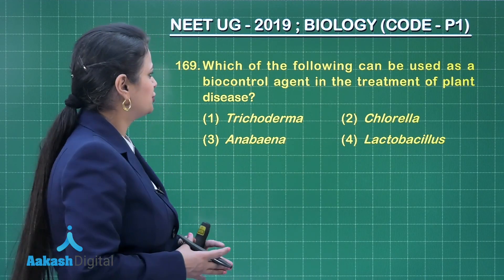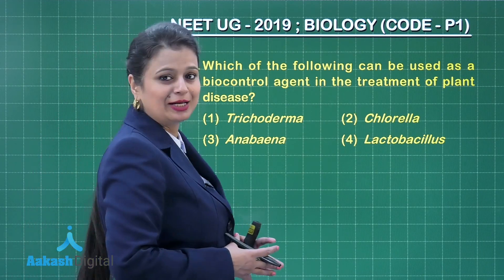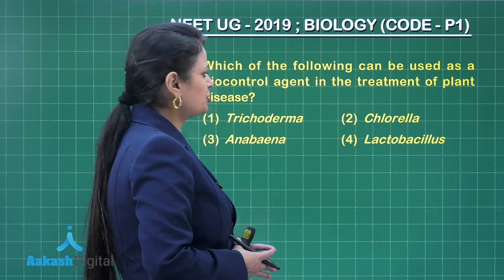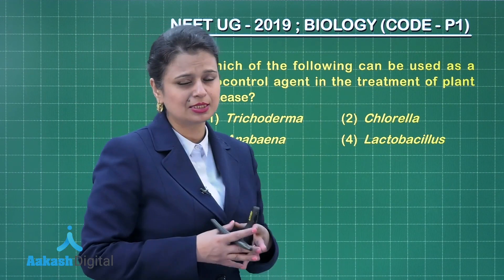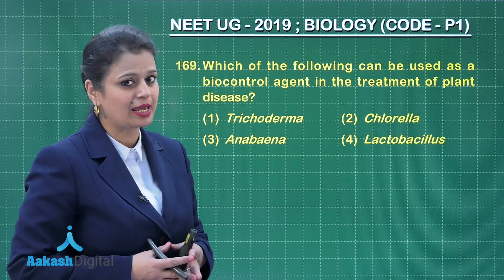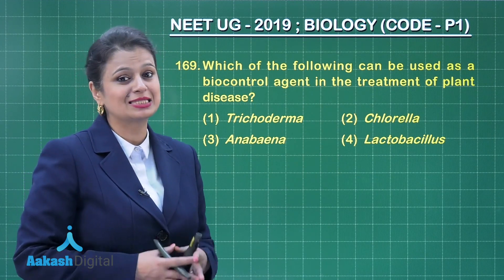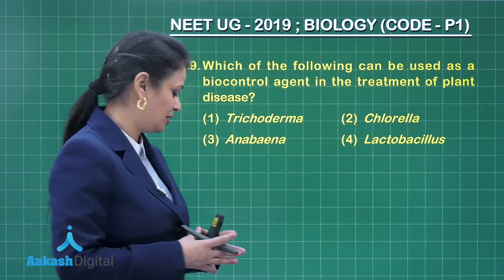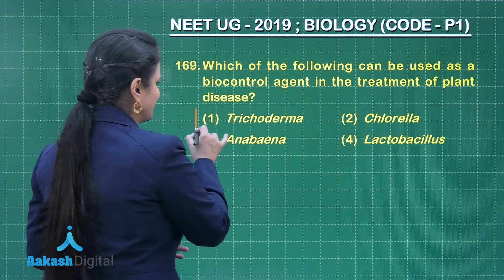Question 169: Which of the following can be used as a biocontrol agent in the treatment of plant diseases? Several plant pathogens can be controlled with the help of this fungus — that is Trichoderma. So this is our right answer.